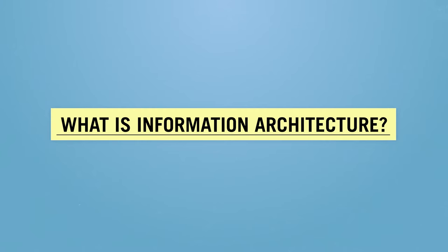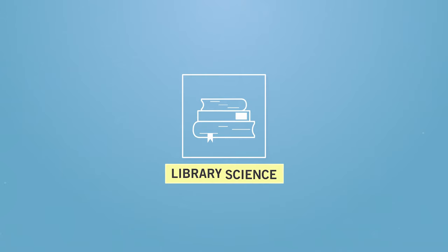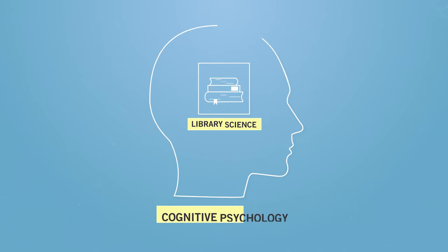First and foremost, what is information architecture? Information architecture has roots in both library science and cognitive psychology. When designing the information architecture of a website or app, you can think of yourself as a digital librarian. Just as a real librarian organizes books, you are organizing content across a digital product.